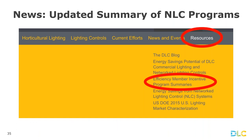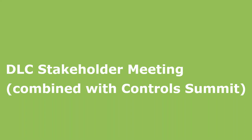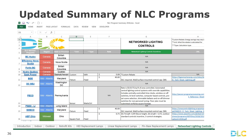In other news about network lighting controls, we recently updated a summary of network lighting control programs. You can find that on the designlights.org website under resources — it's called the efficiency member incentive program summaries. This has a new tab called network lighting controls, visible in the bottom right corner, and that worksheet has a summary of nearly 50 programs throughout the US and Canada that support network lighting controls. As a vendor, if you're wondering where incentives are available across North America, this is a good resource and it's a pretty good snapshot.